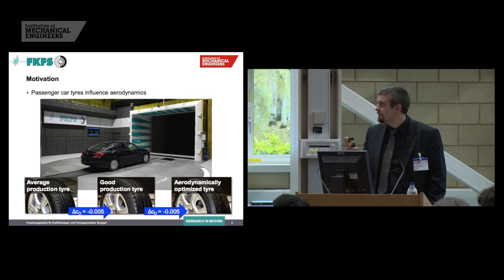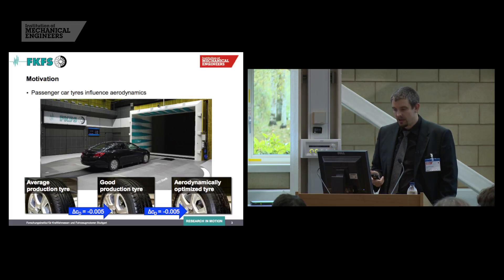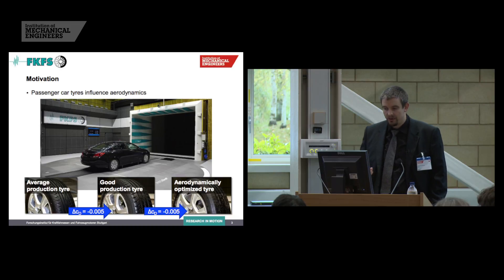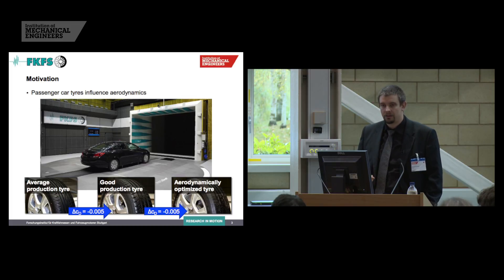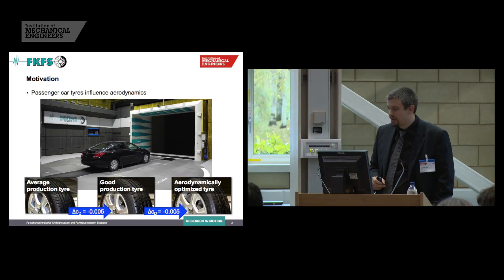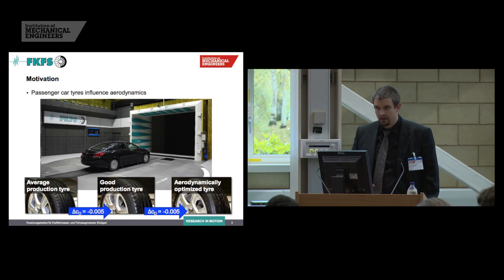As you probably all know, the tires of a passenger car can influence the drag of the vehicle in quite some way when you measure it in the wind tunnel. Even if you use the same rims and the same tire size, the drag value can change quite much. For example, if you compare an average production tire with an aerodynamically good production tire, the difference is usually in the magnitude of around five drag counts. And if you take this good production tire and optimize it concerning its aerodynamic properties, you can even increase this delta in drag for the whole vehicle by another five drag counts — and this without any negative change on the other tire characteristics.